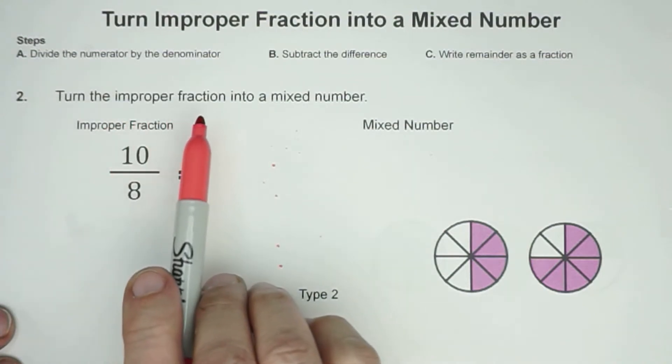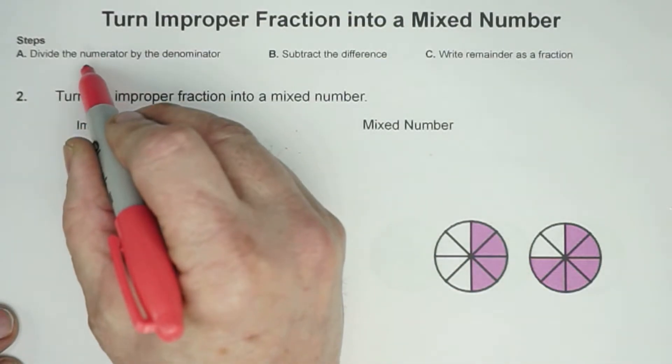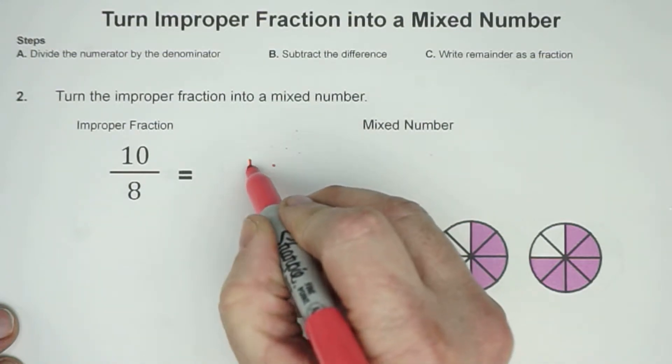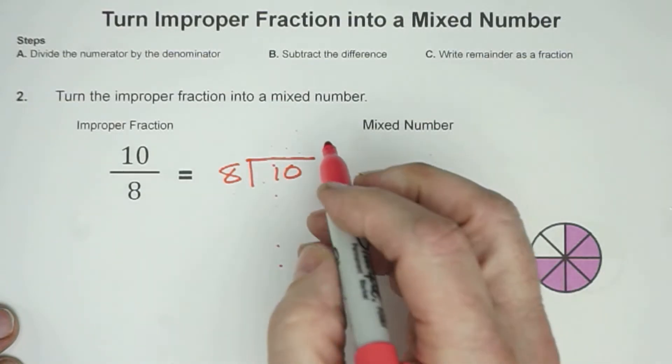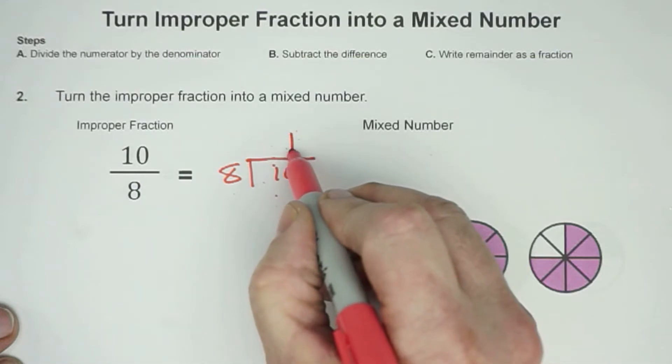Let's turn the improper fraction into a mixed number. So here we have 10/8. Our first step is to divide the numerator by the denominator. So 10 divided by 8.